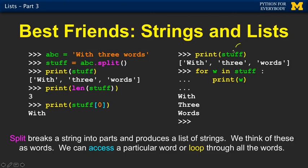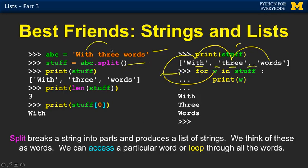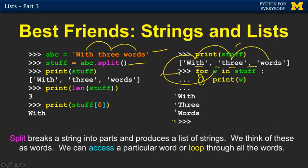So now we have stuff, and we have three items, and we're going to loop through them. We have an iteration variable w that's going to go through the three words in the list. The code to make this work is: here's my string, split it, and then write a simple for loop that goes through and looks at each of the three words. It only took three lines of code, and the loop runs three times — each time through, it's going through all three words.